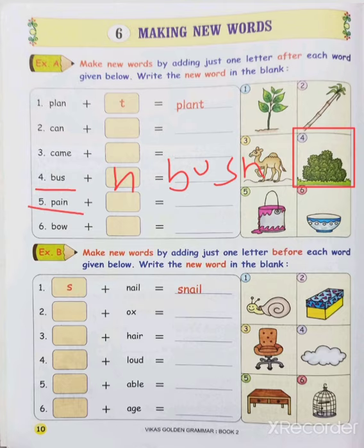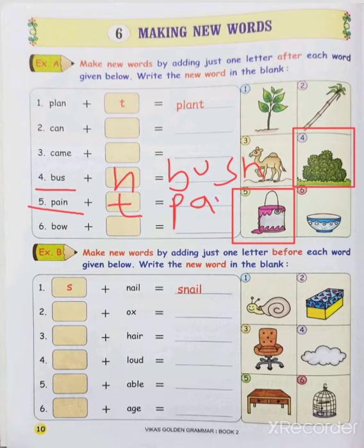Moving to the fifth one: P, A, I, N — pain. Pain means dard hona. What is the picture here? It shows paint. What is the spelling of paint? P, A, I, N, T. If we add T here, which new word do we get? P, A, I, N, T — paint. So by adding the letter T, we get the new word: paint.